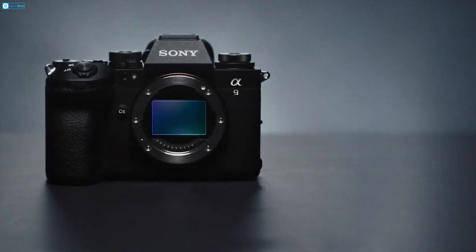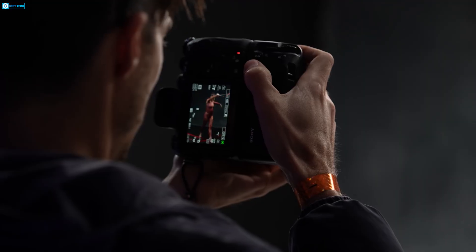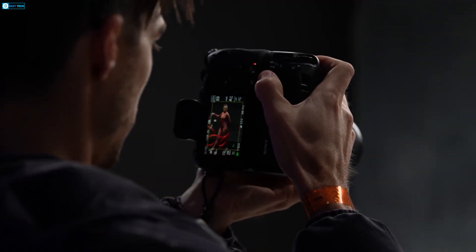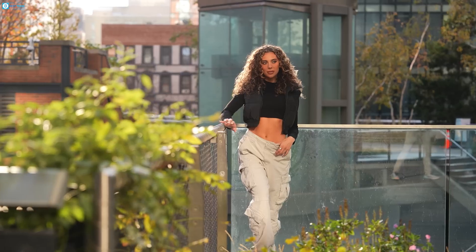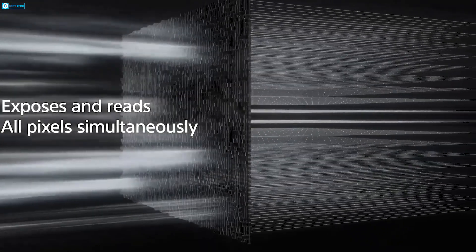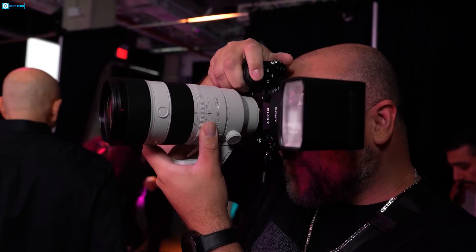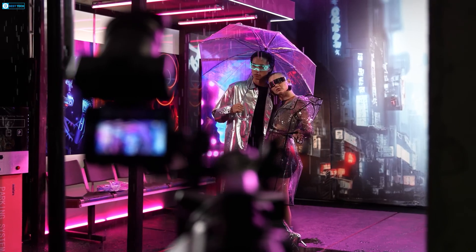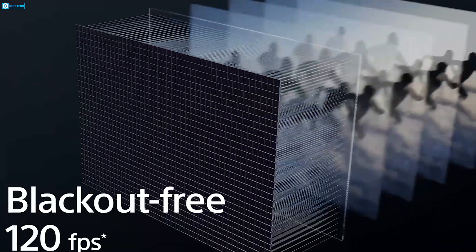The Sony A9 III stands as a pinnacle in the evolution of camera technology, introducing the revolutionary global shutter that promises to redefine the landscape of digital photography. This cutting-edge feature opens the door to a future where motion distortion artifacts are relegated to history. As sensor fabrication techniques continue to advance, it is anticipated that the global shutter will become the standard in top-tier cameras, further solidifying its place as a transformative innovation in photography.